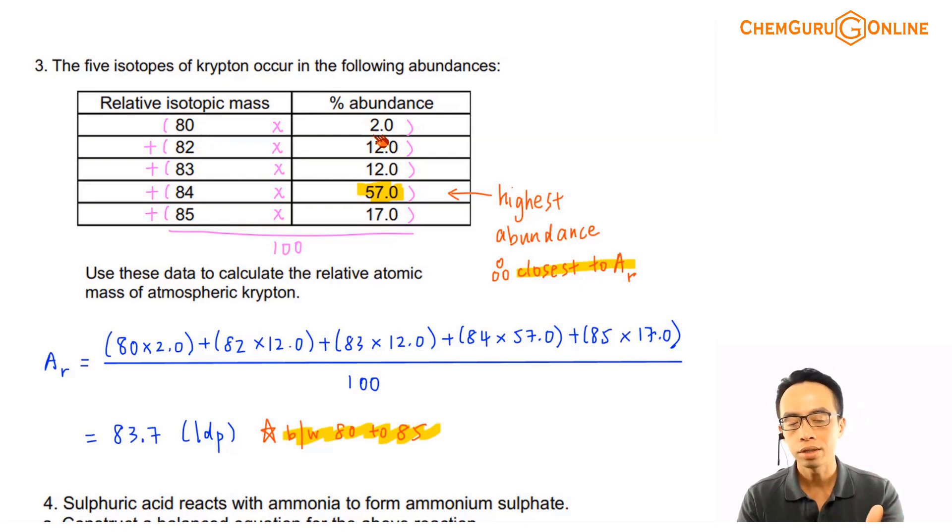The mass times the abundance, I do this for everybody. Add everything together, the whole thing divided by 100%, then I'll get an answer. In this case, I'll get 83.7.